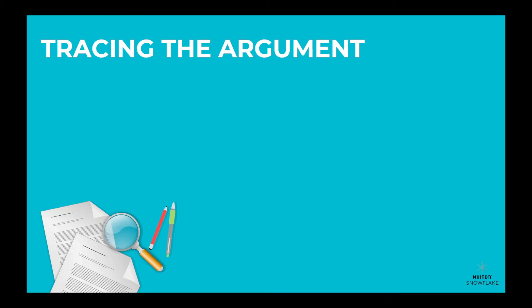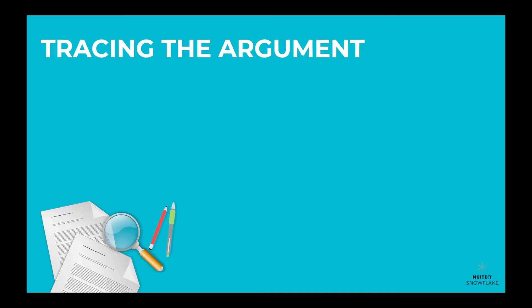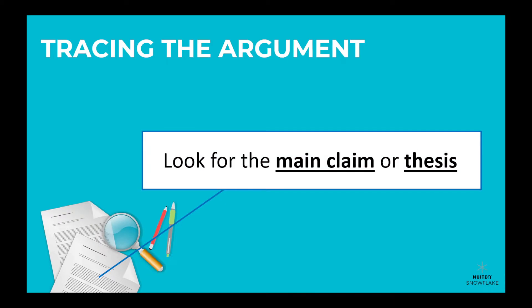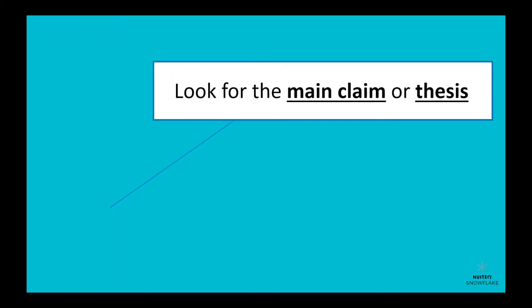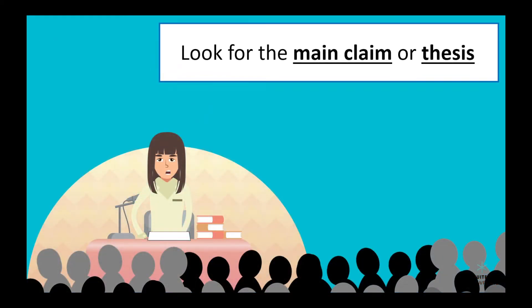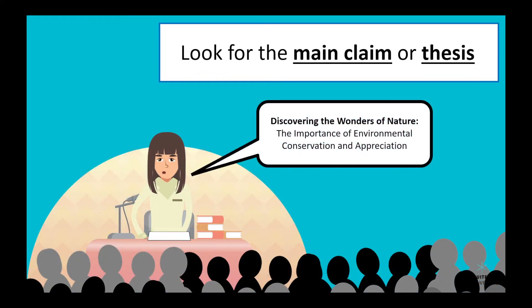When we're reading an informational text, it's important to understand the author's argument. To do this, we need to look for the main claim or thesis the author is making. Think of it like this: if you were making a persuasive speech, what's the big idea that you want to convince your audience of? That's your thesis or argument.